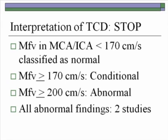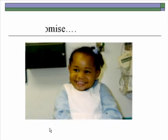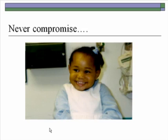The interpretation of transcranial Doppler for the STOP stroke protocol: mean flow velocity in the MCA or ICA less than 170 cm/s is classified as normal — usually between 140 and 170 is normal for these children. Mean flow velocity greater than or equal to 170 cm/s is considered conditional. Mean flow velocity greater than or equal to 200 cm/s is considered abnormal. All abnormal findings must be documented on two separate occasions. It is important never to compromise in these studies because it truly impacts the patient's future.